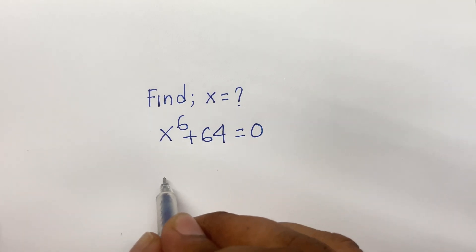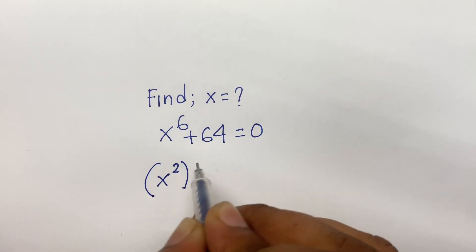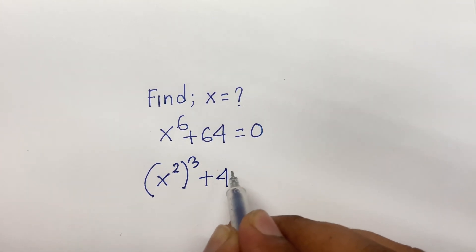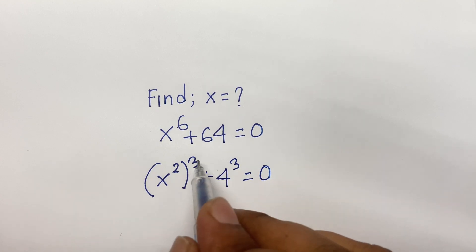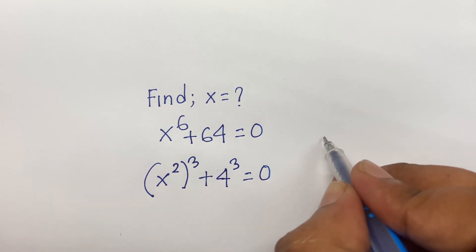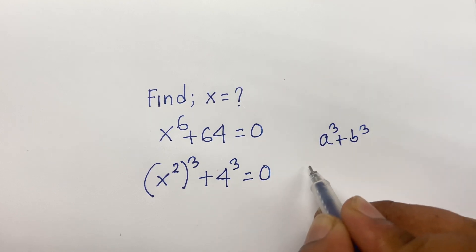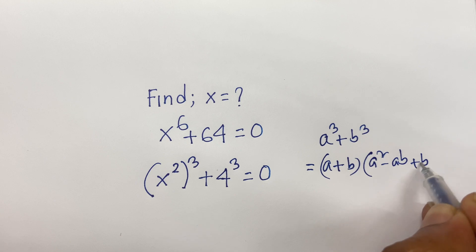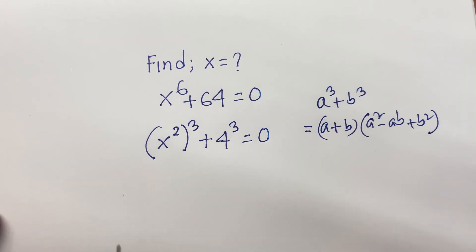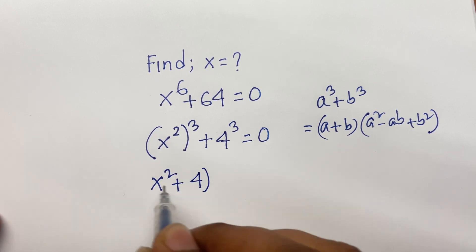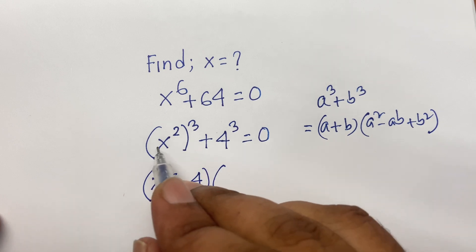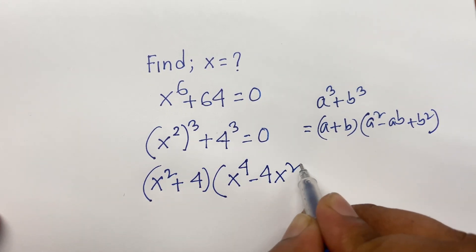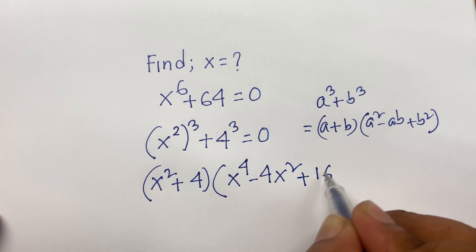This equation becomes x squared, bracket power 3 — because 3 times 2 is equal to 6 — plus 64, like 4 to the power 3, is equal to 0. Now, look, both exponents are 3. The cubic rule is: a cubed plus b cubed equals (a + b)(a² − ab + b²). According to these rules, here a is x² and b is 4, so we get x² plus 4, times x to the power 4 minus 4x² plus 16, equal to 0.